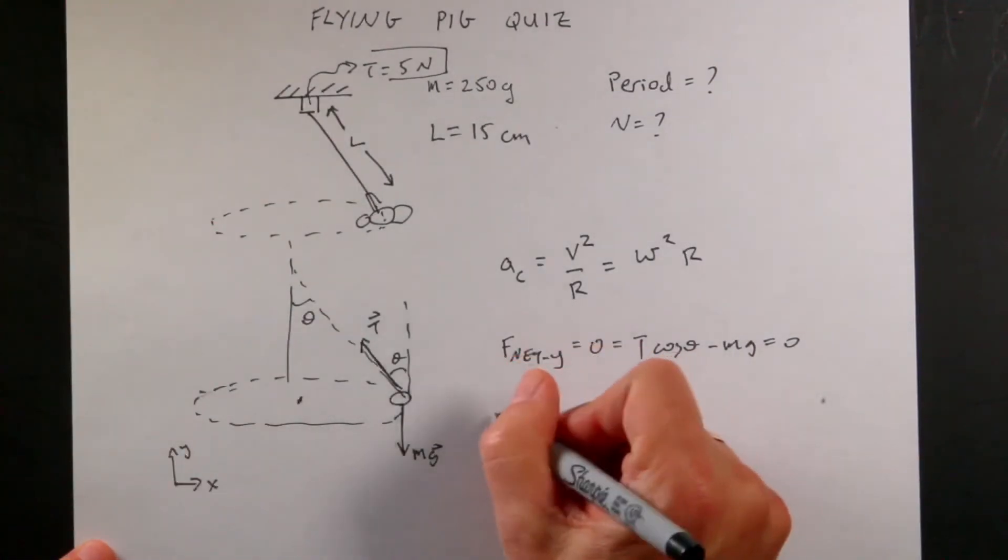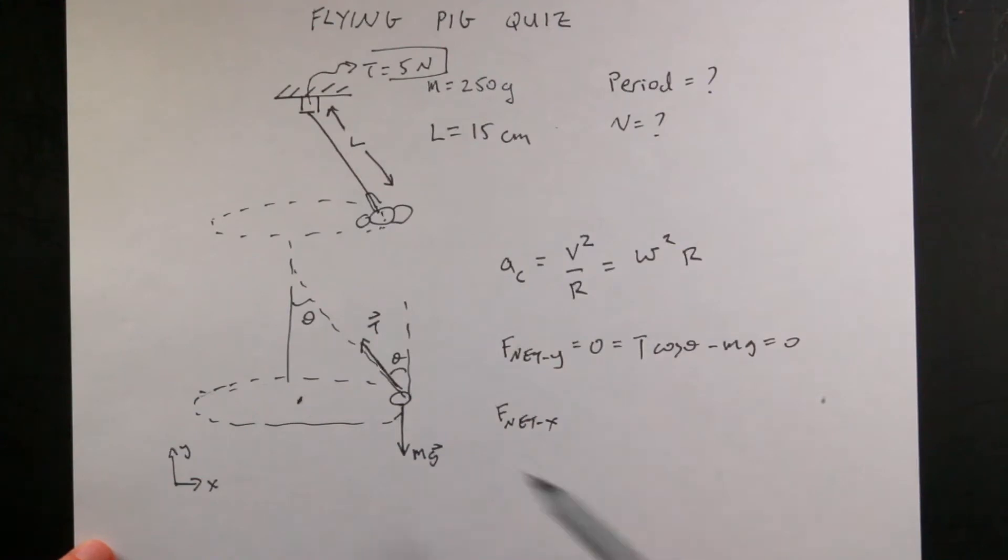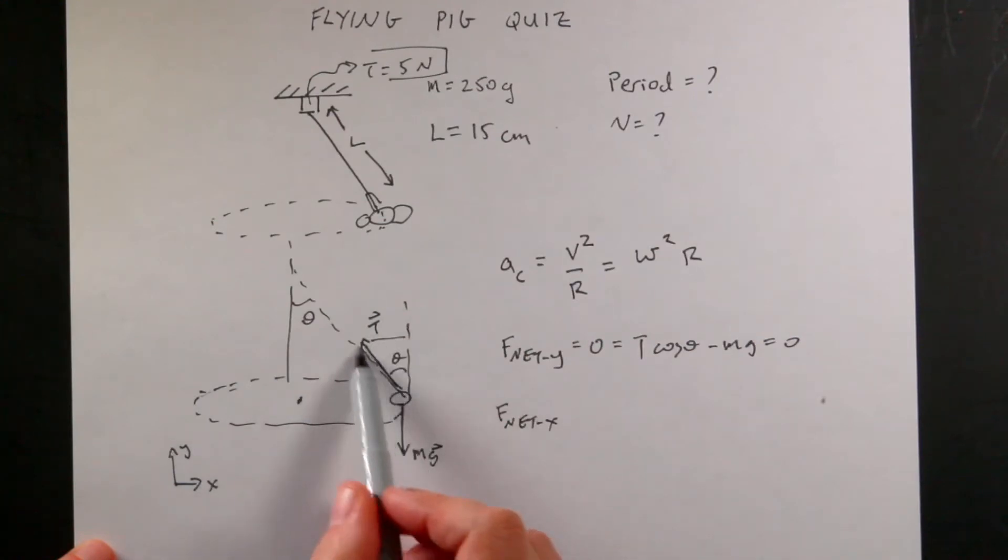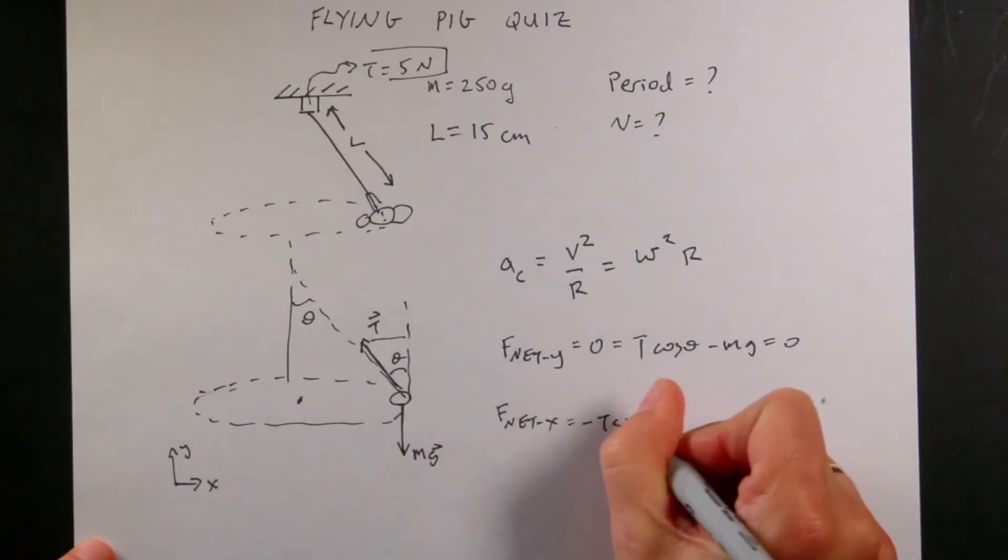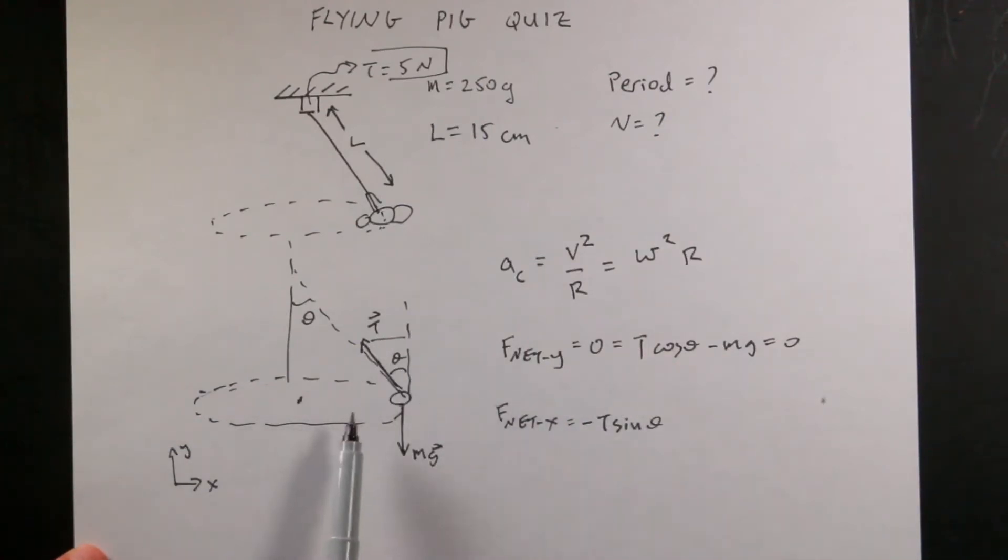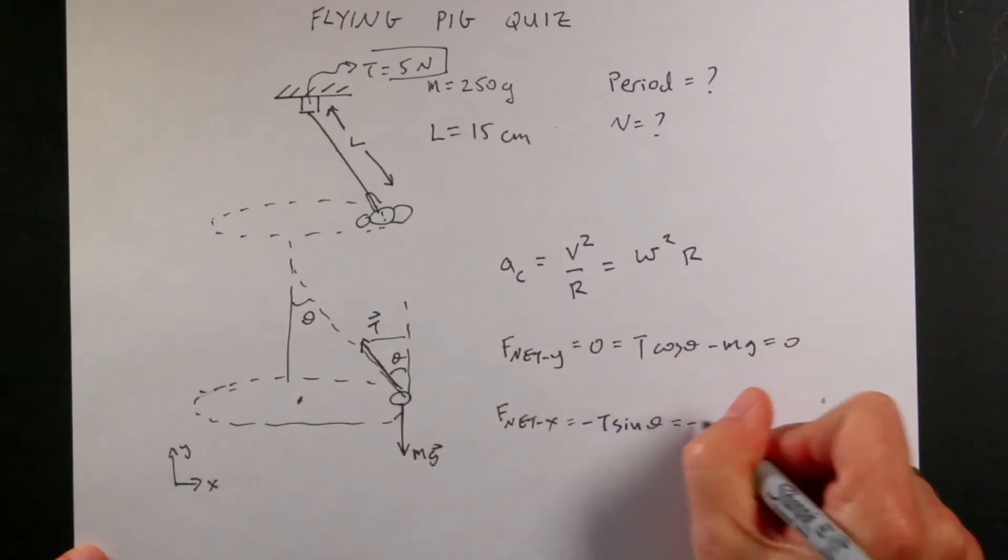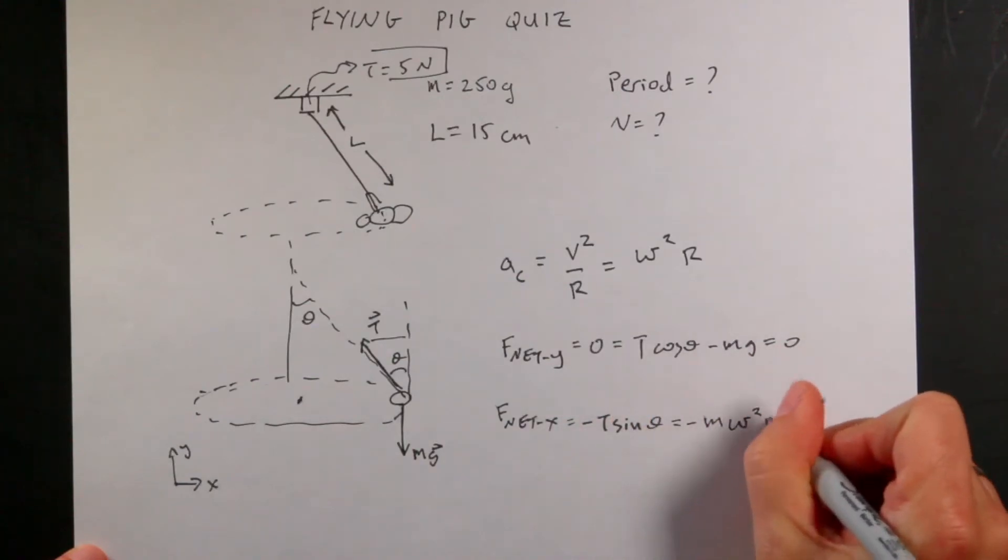Let's do the x direction now. f net in the x direction. Well, there's only one force that acts in the x direction. That's part of this tension. So it'd be, this is the x component right there for this triangle. So if this is the tension, and that's the angle theta, this would be t sine theta. So I get negative t sine theta. And you'll notice that it's negative because I defined x, x is this way. Just based on the way I drew my picture, the acceleration would be this way. And that's going to be equal to the mass times acceleration, which is also in the negative x direction. So it's going to be negative m. And then the acceleration, let's use this one right here, omega squared r.